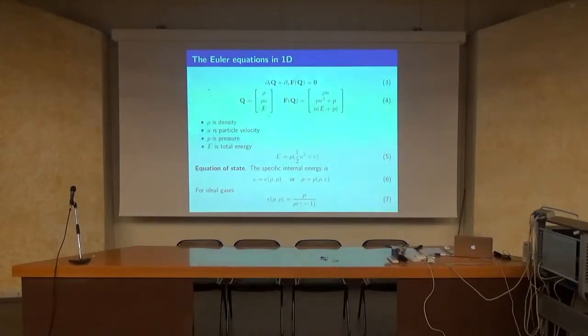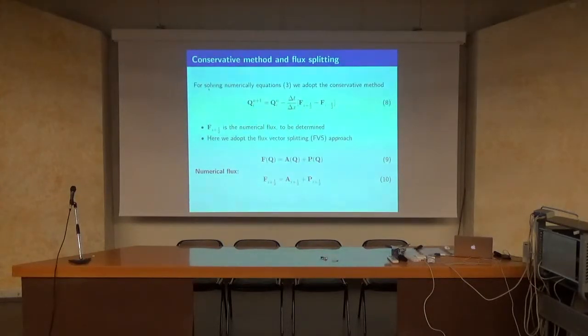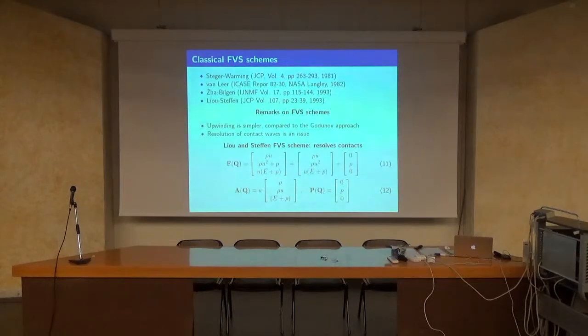The ideas go like this: you have the Euler equations in 1D with density, velocity, pressure, and total energy. You equip this with an equation of state. In the ideal gas case, internal energy is defined by this ratio. The flux vector splitting approach splits the flux into two parts: an advection part and a pressure part. Then you compute the numerical flux as the sum of the flux for the advection and the flux for the pressure part.